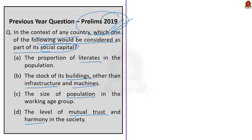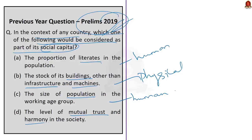This is a very easy question. With some basic understanding and common sense, we can solve this question. Option B refers to physical capital, and options A and C are examples of human capital — we have read this in our geography NCERTs. So without knowing much about option D, we can easily guess that this is the correct answer.